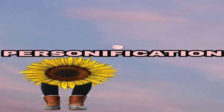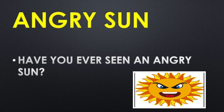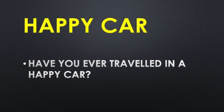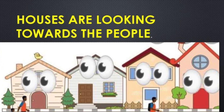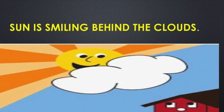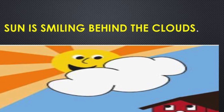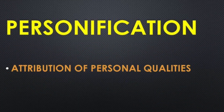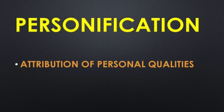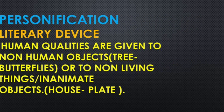Person-like qualities. Have you ever seen an angry sun? Have you ever traveled in a happy car? Houses are looking towards the people — gharon ki aankhein hain, aur wo logon ki taraf dekh rahe hain. Sun is smiling behind the clouds. Smiling, looking, happy, angry — these are the characteristics of human beings. And when the qualities or characteristics of human beings are given to non-human or inanimate objects, non-living things, it is known as personification.